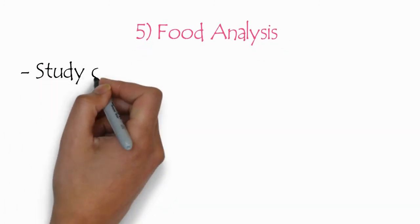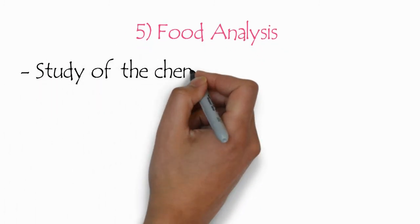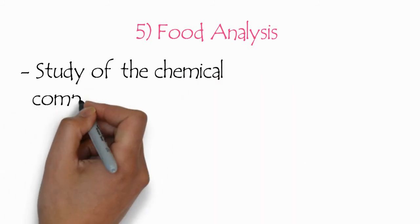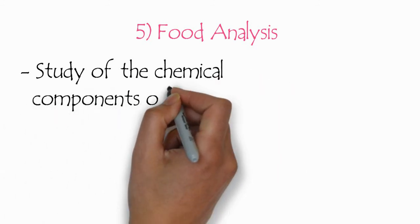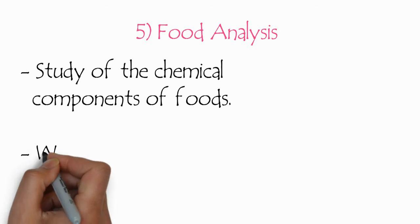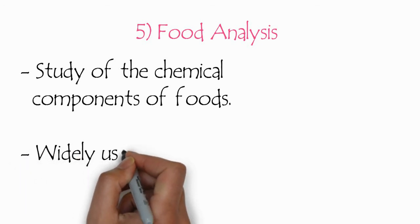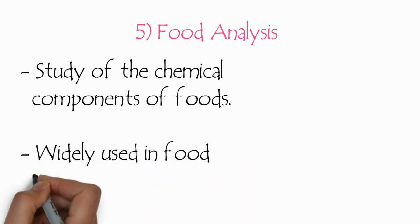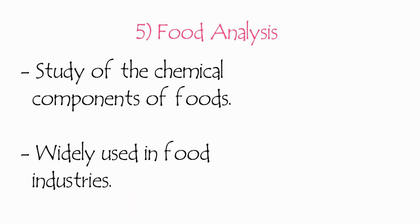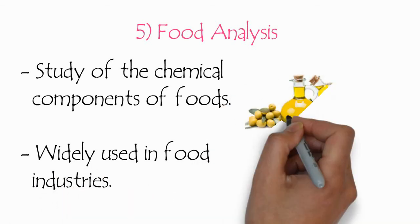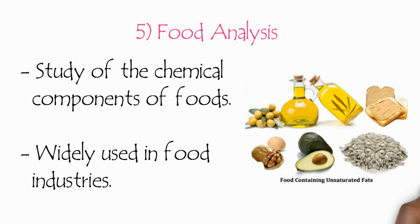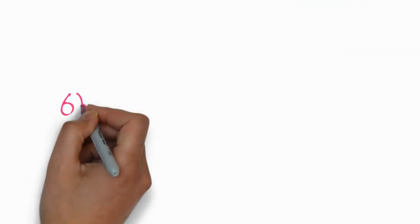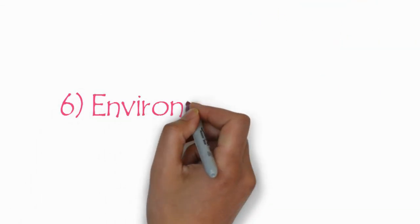The fifth one is food analysis in the food industry. In this case we study the chemical components of food, different types including plant food and animal food. They are widely used in food industries. For example, we determine the components of these different foods, whether plants or animals.